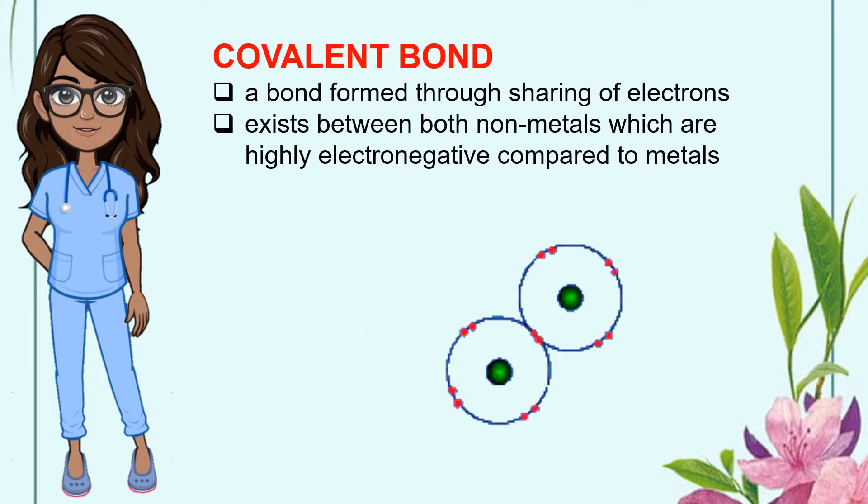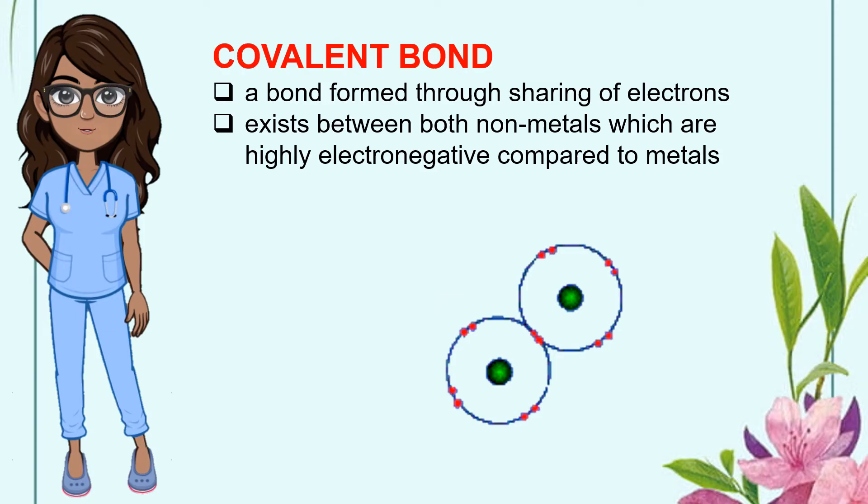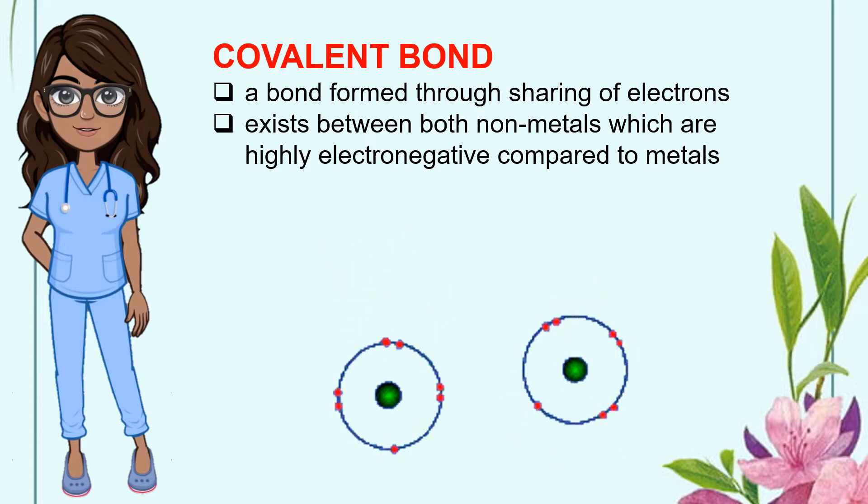Covalent is a bond formed through sharing of electrons. It exists between both non-metals which are highly electronegative compared to metals. Due to the different or similar number of valence electrons of combining atoms, the resulting molecule may exhibit polarity.